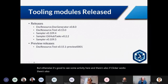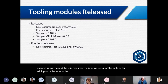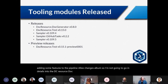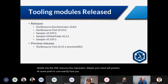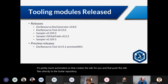There's also quite a few changes on the toolings, and that's why today's update is mainly about this. The DSC Resources modules used for the build and pipeline features have had changes. I'm not going to go into full detail on the DSC Resource Doc Generator — maybe someone will present that — but it's pretty much automated and creates the wiki for you, pushing wiki files directly to the GitHub repository.